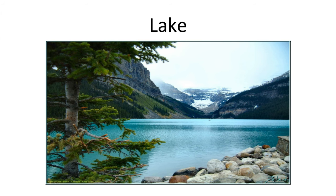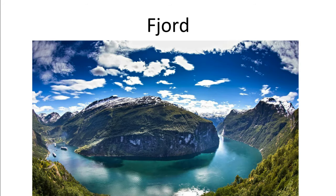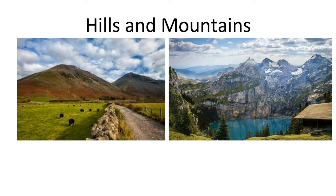Lake. Fjord — fjords can be found in Scandinavia, in Sweden and Norway; a very beautiful type of landscape. Hills and mountains: the main difference between hills and mountains is that hills are lower down, not as high, while mountains are higher. Hills and mountains.